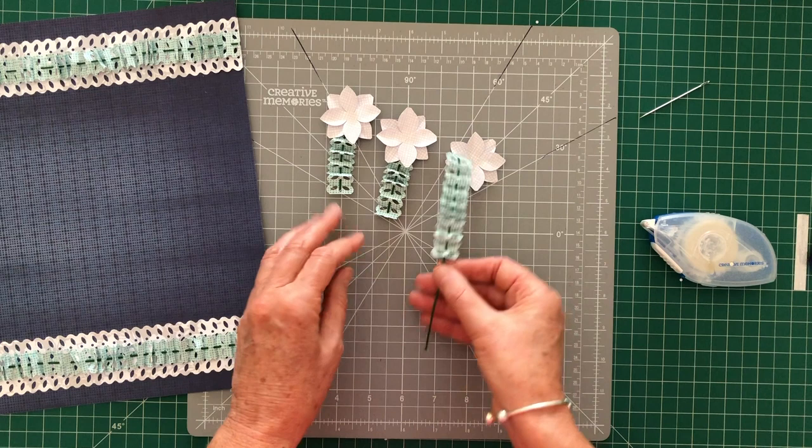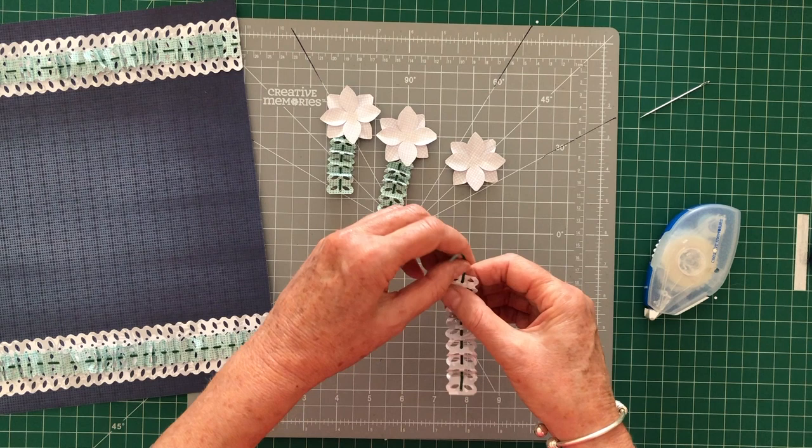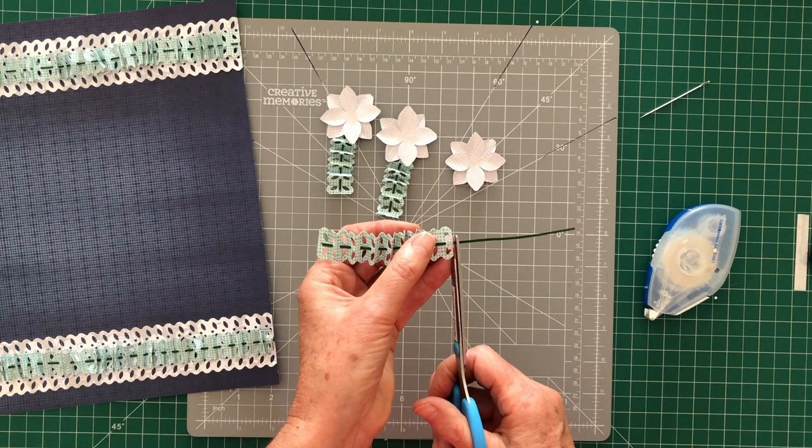So all I'm going to do is just add a little bit of tape runner in here. This bit of the flower is going to be down under the border so you're not going to see the tape runner. It'll probably help it stick anyway. And just with a pair of scissors, just going to trim that off now.